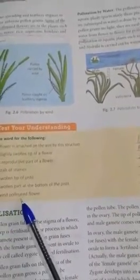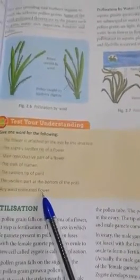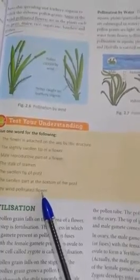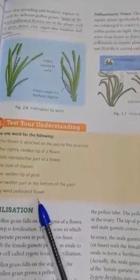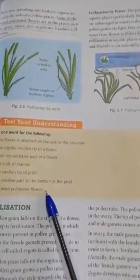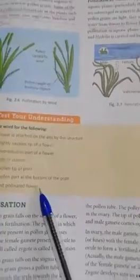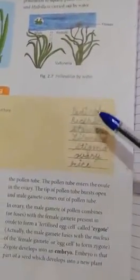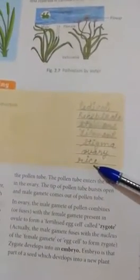Any wind pollinated flower and you can give many examples. So, you can say anyone like rice. Many are there rice, maize, sugar cane, bamboo, grass. So, you can write any one example over. So, you have to fill this yourself. Thank you.